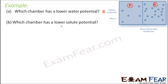Which chamber has a lower solute potential? Wherever you have the concentration of solute as less, that will have a lower solute potential. Here the solute concentration is more in B. When the solute concentration is more, the value of solute potential is more negative. More negative is actually less. Therefore, B will have lower solute potential.